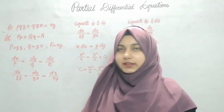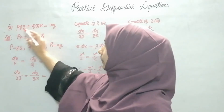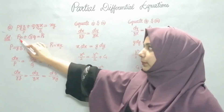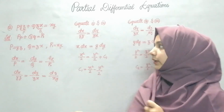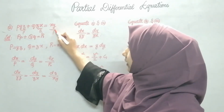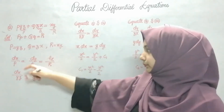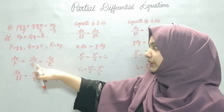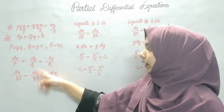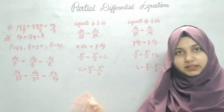The next question is: P·yz + Q·zx = xy. Here the coefficient of small p is capital P, so capital P = yz; capital Q = zx; and R = xy. This is in the Lagrange's form. The auxiliary equation is dx/P = dy/Q = dz/R, so substituting: dx/yz = dy/zx = dz/xy.